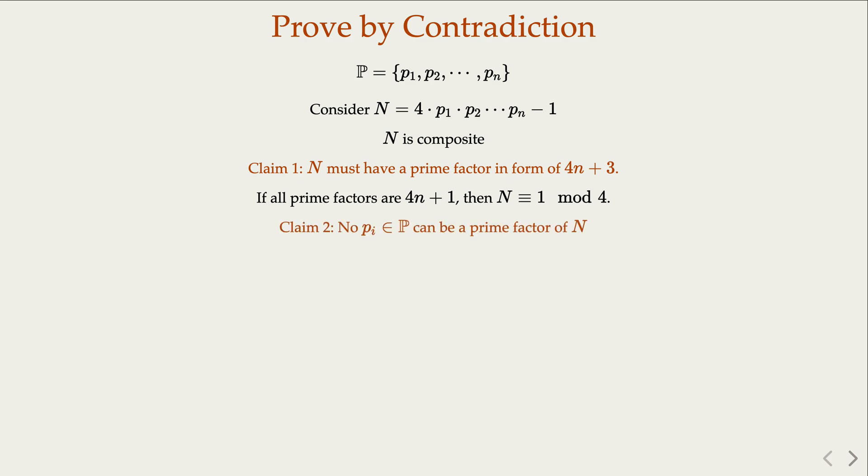Now Claim 2 is that N cannot contain any prime factor from the set P. In other words, all the p_i, p_1, p_2, up to p_n cannot be a prime factor. Why? Because if they are factors, like for example, if p_i divides N,